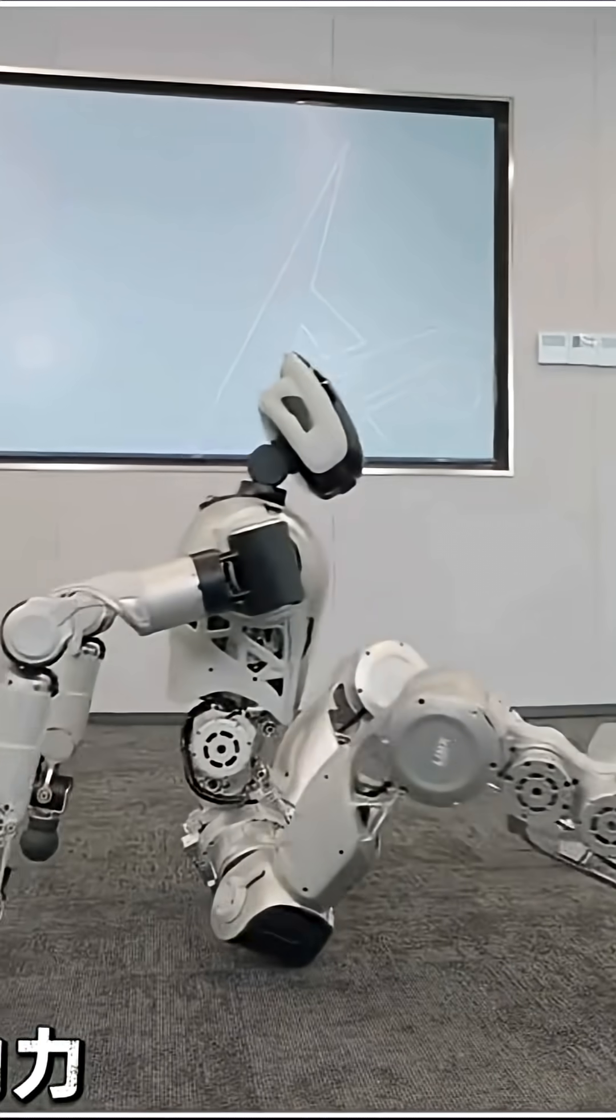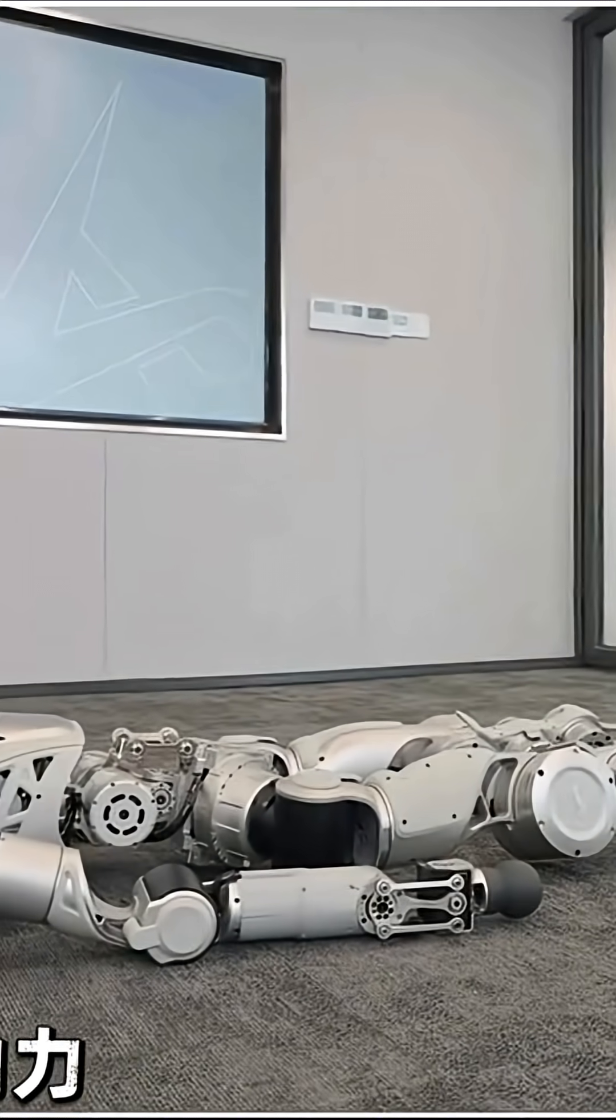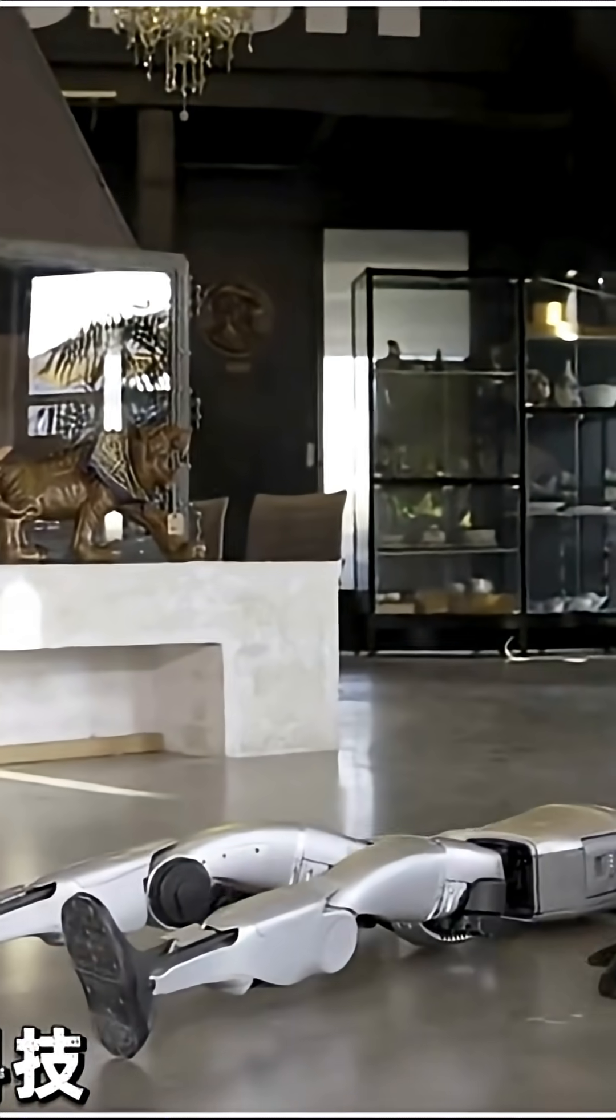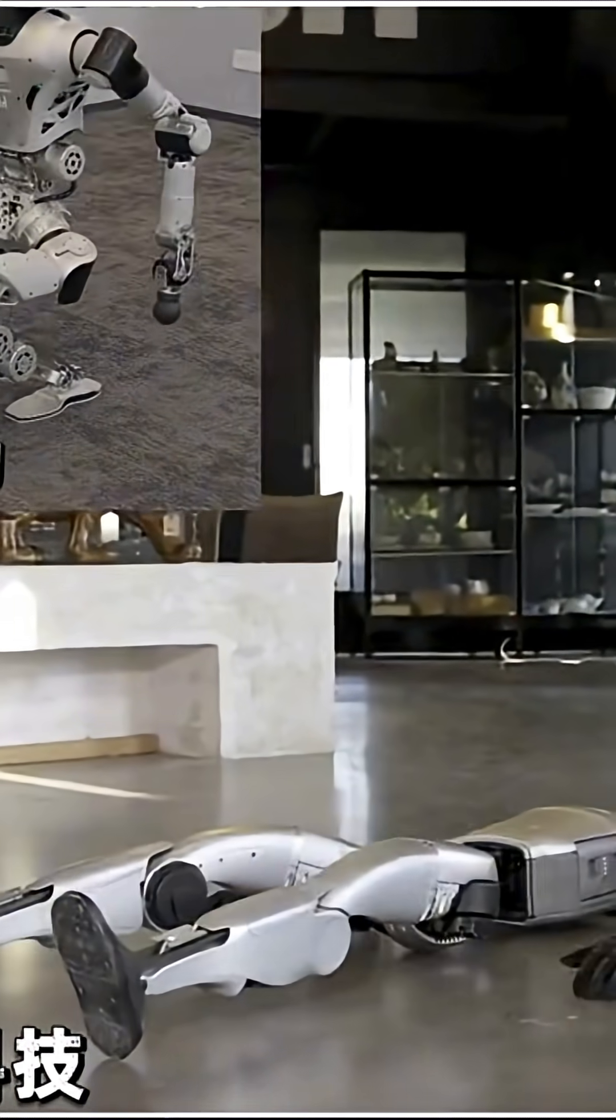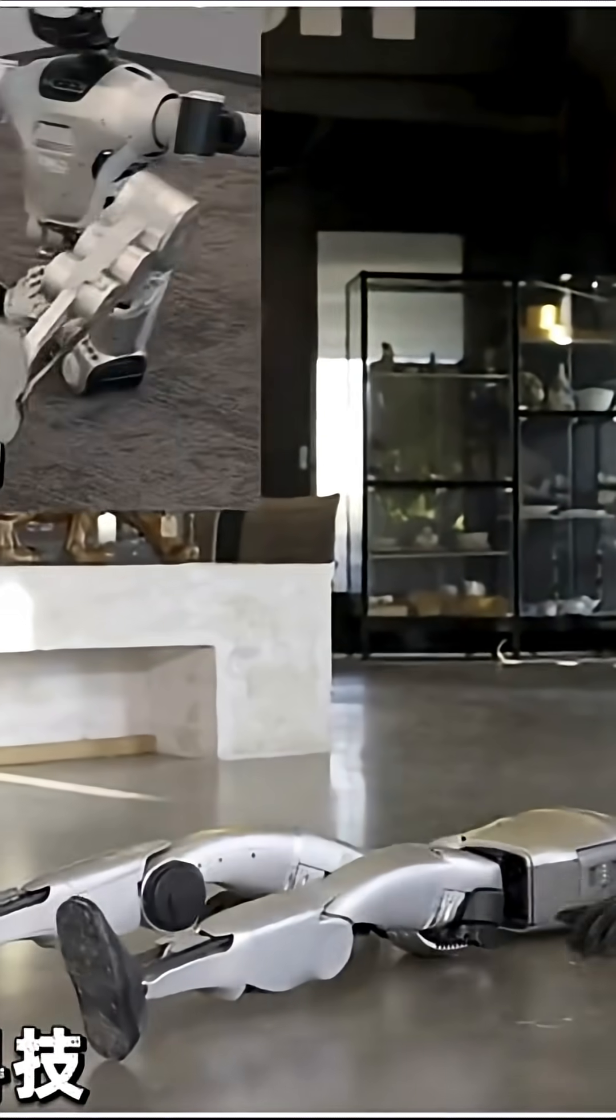It's on par with Figure AI, the world's highest-valued robot company. This footage compares the full-body motion control of robots released by both companies around the same time. We see Zhuji Dynamics outperforms Figure AI in speed and vertical height.